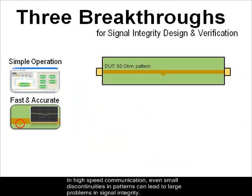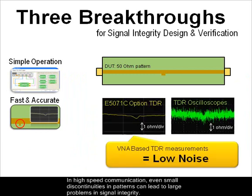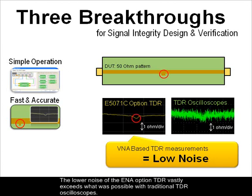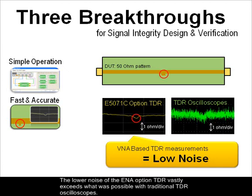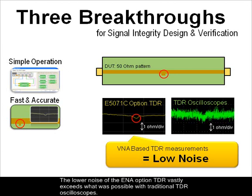In high-speed communication, even small discontinuities in patterns can lead to large problems in signal integrity. The lower noise of the ENA Option TDR vastly exceeds what was possible with traditional TDR oscilloscopes.